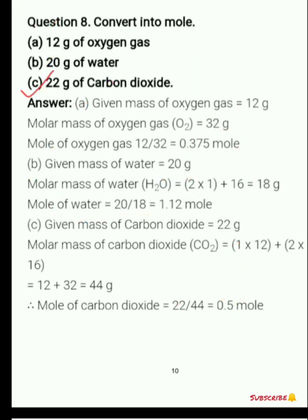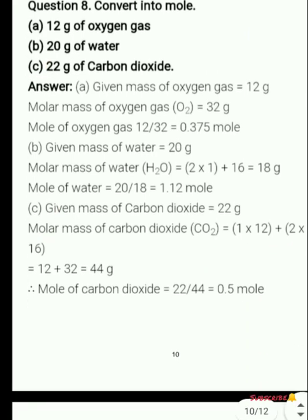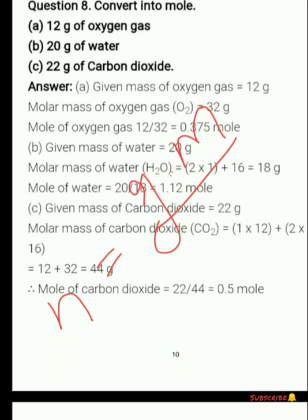Next, 22 grams of carbon dioxide CO₂: molar mass is 12×1 + 2×16 = 44 grams. Given mass is 22 grams, so moles = 22 ÷ 44 = 0.5 moles. The formula to find number of moles N = given mass ÷ molar mass. This single formula can solve all such questions.